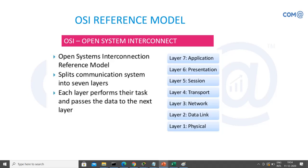For example, IBM followed a token ring architecture while Intel followed an Ethernet architecture, making communication between them impossible. To solve this, an international standard was needed so that manufacturers and developers could follow it and create a standard environment for global communication. This is the reason the OSI reference model was brought in as part of the ISO organization's standardization effort, helping manufacturers follow standards when building devices.